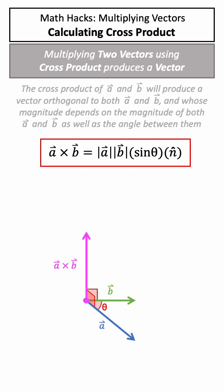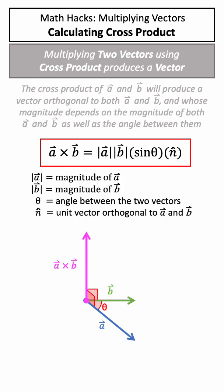There are two formulas to calculate cross product. The first is shown here, which uses the magnitude of A and B, the sine of the angle between them, and n which is a unit vector in the direction of the cross product, shown in purple.